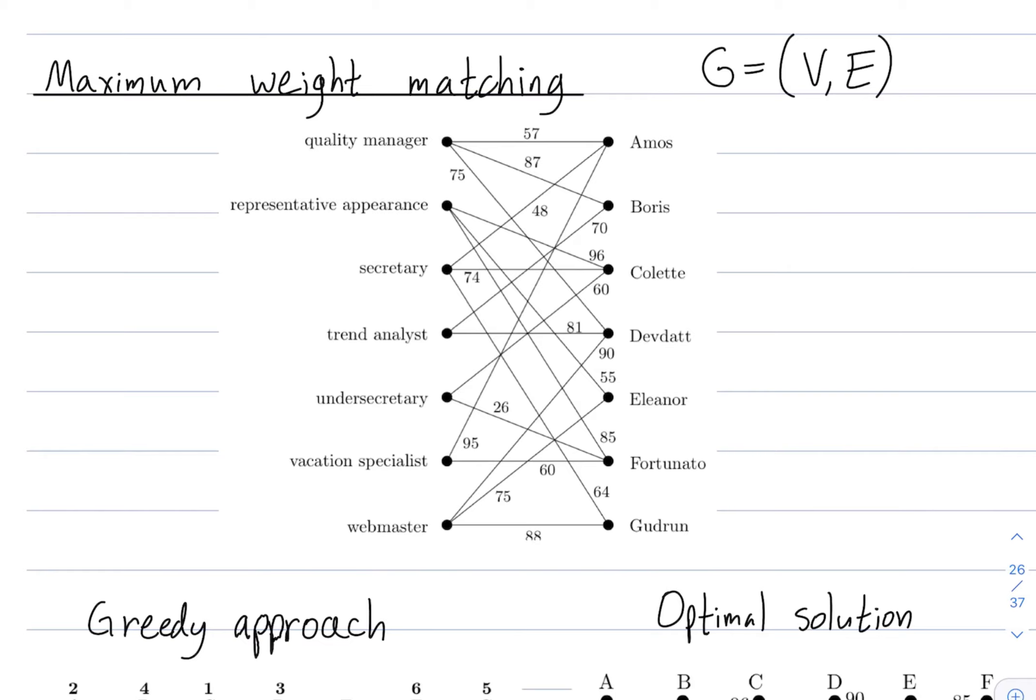Amos would be quite effective as a vacation specialist. Right, his effectiveness would be 95. And he'd be reasonably effective as a quality manager, 57. So, this graph is bipartite because the edges represent effectivenesses of matchings. But we would only match a person to a role, we wouldn't match a person to another person, we're not matchmakers. Nor would we match roles to roles.